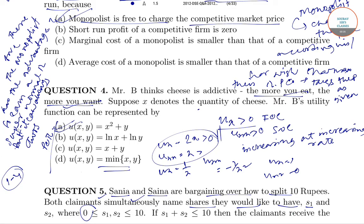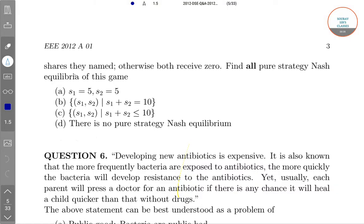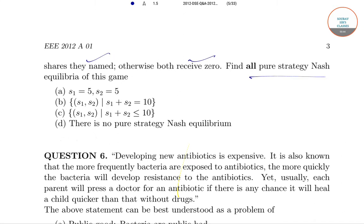And the claimants receive, if they claim something like this, when the claimants receive the shared names, otherwise they both receive 0. So find all the pure strategy Nash equilibrium.